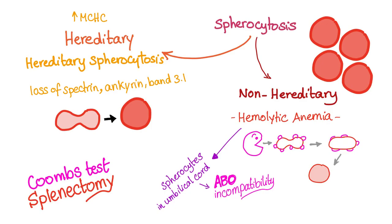Pay close attention here because many students confuse this. Just because you have spherocytes on your blood film doesn't necessarily mean that you have hereditary spherocytosis. This could simply be hemolytic anemia. When you see spherocytes on the blood film, it could be either hereditary spherocytosis or hemolytic anemia — and the majority of cases are just hemolytic anemia.